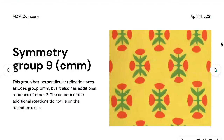Symmetry group nine is named CMM. This group has perpendicular reflection axes, as does the group PMM, but it also has additional rotations of order two. The centers of the additional rotations do not lie on the reflection axes.